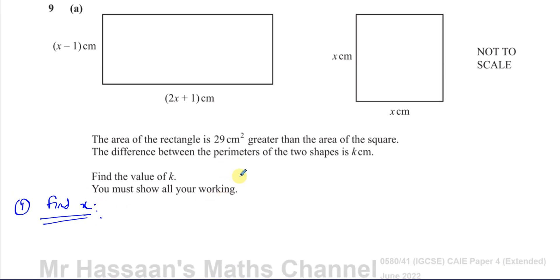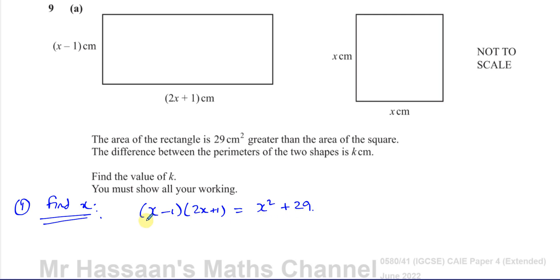We know the difference between the areas is 29 centimeters squared. The area of the rectangle, given by (X minus 1)(2X plus 1), is equal to the area of the square, which is X squared, plus 29. If I add 29 centimeters squared to the area of the square, that will equal the area of the rectangle. So I can form an equation from this and find X.